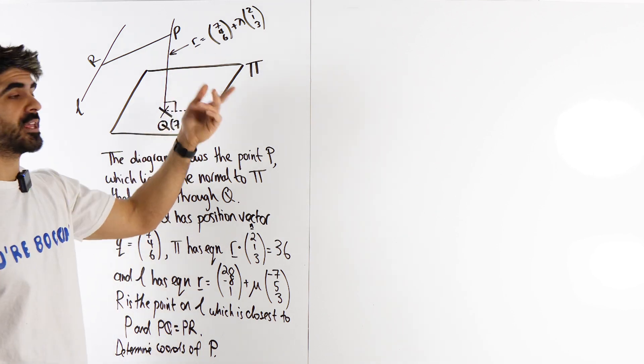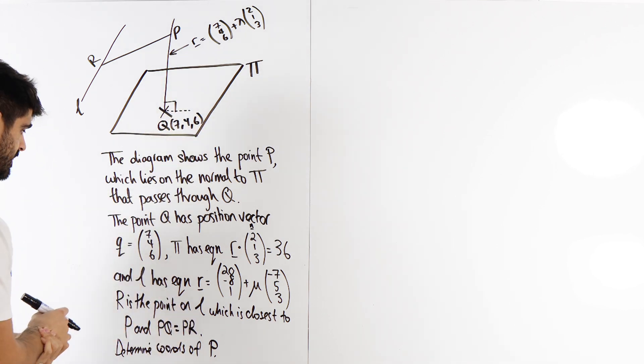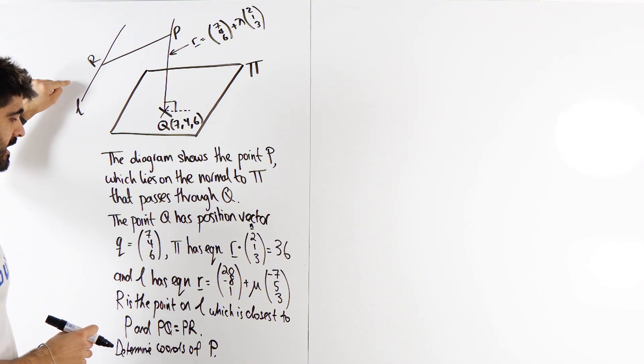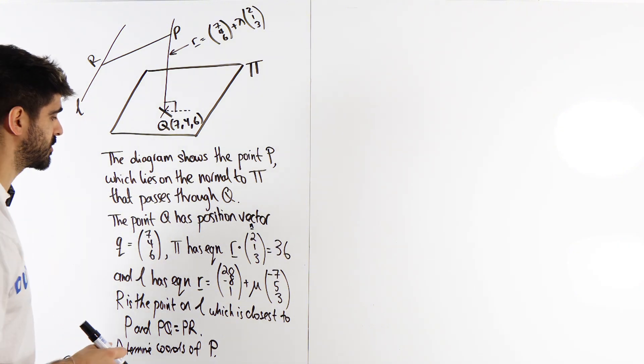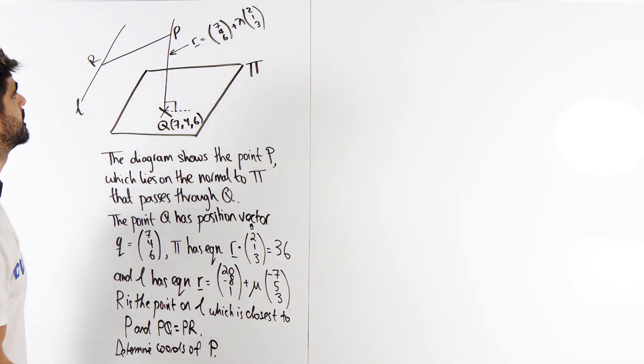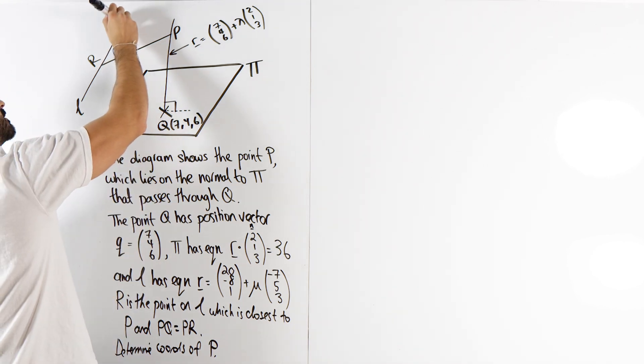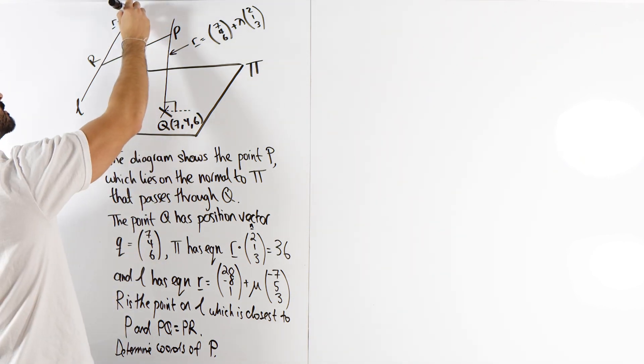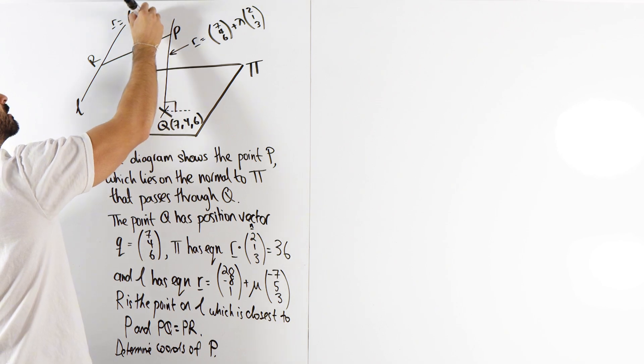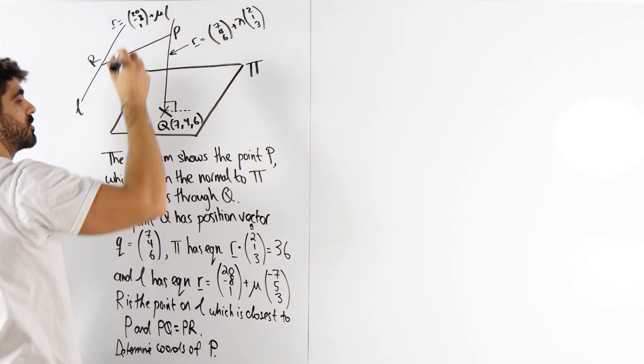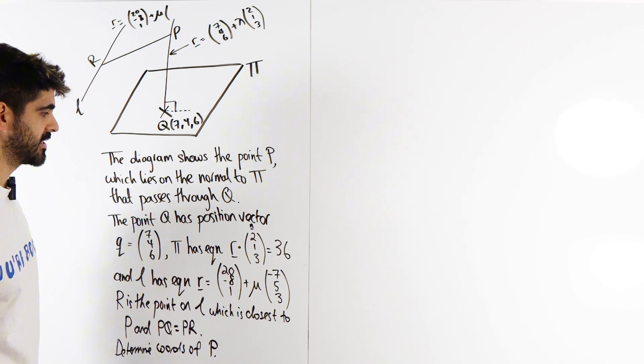So P is somewhere on there. We're going to have to work out what lambda is. And L, this one here, has equation R equals that. I'll just put it here: 2, 0, minus 8, 1 plus mu times minus 7, 5, 3.